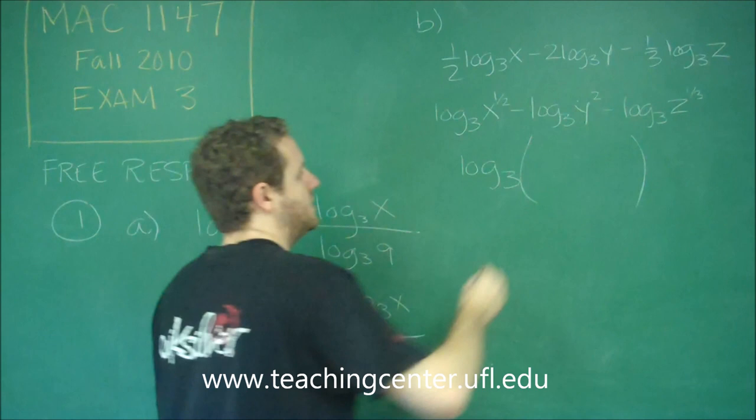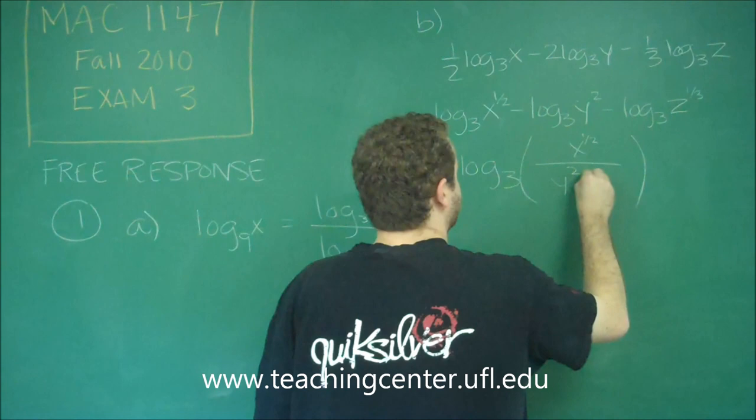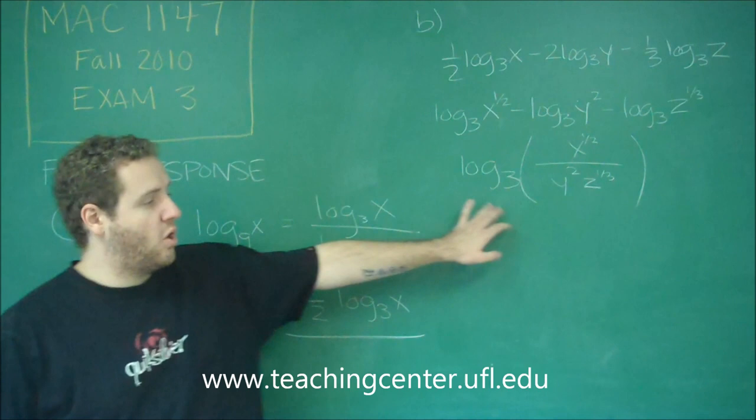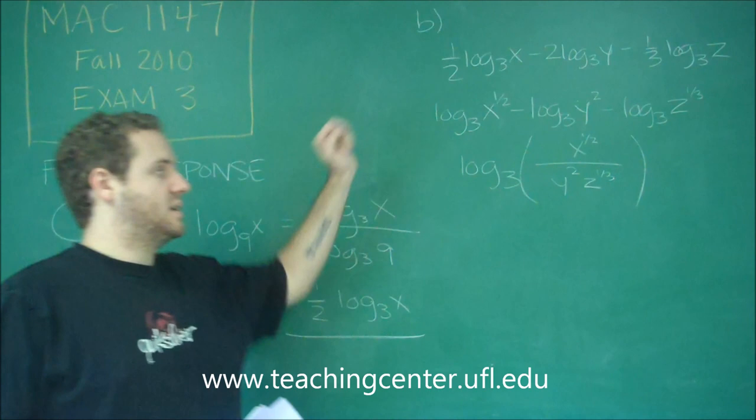We have log base 3, and now we have a whole big fraction. On top is just going to be x to the 1 half. On the bottom, we're going to have y squared times z to the 1 third. And now this is all as a single logarithm with base 3.